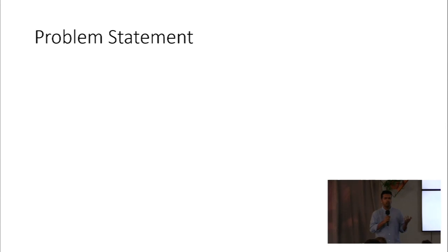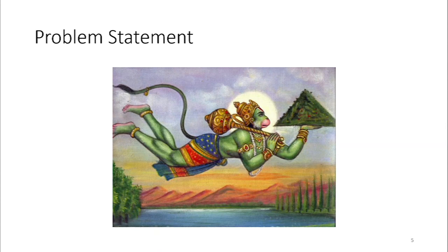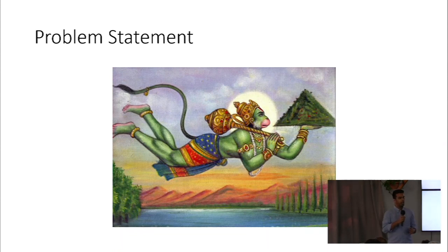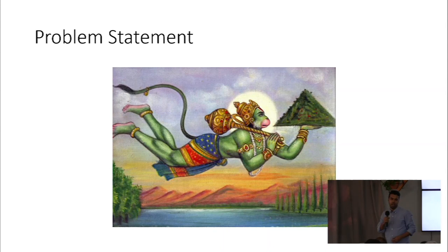For the problem statement, I'm a fan of metaphors — it's easier to grasp the problem that way. This one is from Hindu mythology, the Ramayana. One of the protagonists is hurt in an epic battle. The healer says they can fix him, but they need a specific medicinal plant called Sanjivani which only grows in the Himalayas. They ask the monkey god Hanuman to bring it. Hanuman goes, finds the mountain, but cannot identify the specific plant.